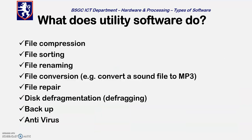What does utility software do? Examples we've discussed include: file compression, sorting, file renaming, file conversion — for example, when I recorded this video it converted from the raw file to MP4 automatically. Also file repair in case files get corrupted, disk defragmentation for when you've got lots of fragments of files taking up disk space, backups, and antivirus.